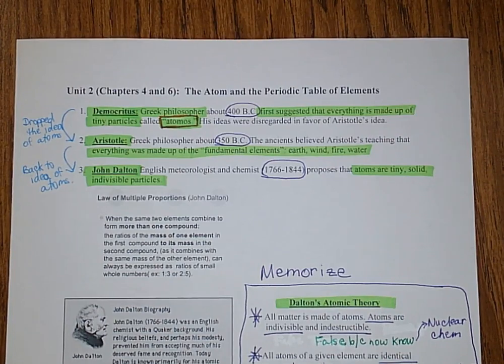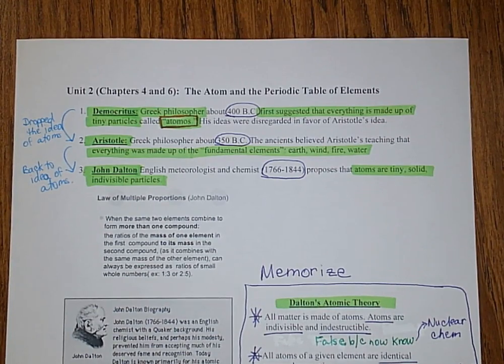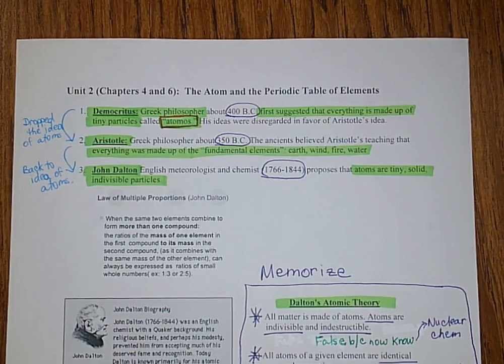Hi guys, this is Mrs. McBride speaking, and today I want to talk to you about the scientists that were involved in coming up with the atomic structure of an atom. The first scientist we have is Democritus.